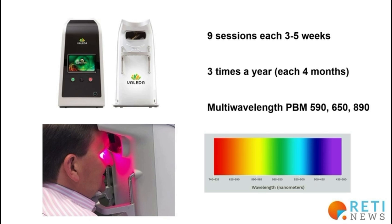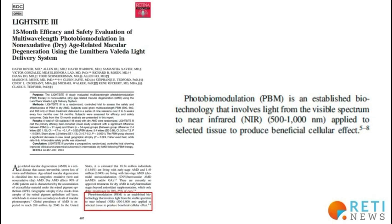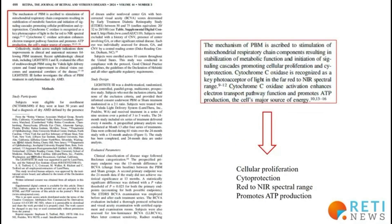This cycle of nine sessions should be repeated every four months, that is, three times a year. In the introduction of the study, it is mentioned that photobiomodulation is an established technique to produce beneficial effects at the cellular level. The beneficial effects would be produced through the activation of cytochrome oxidase, a protein that resides across the cell membrane, stimulating cell proliferation, cell protection, and promoting ATP production with a stimulus in the spectrum from red to infrared.